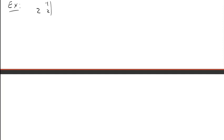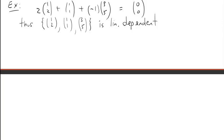For example, if you take 2 times the vector (1, 2), plus the vector (1, 1), plus negative 1 times the vector (3, 5), you get (0, 0). Thus, the set consisting of these three vectors is linearly dependent, and this equation is a dependence relation. Note that the vector in the middle, (1, 1), actually has a coefficient of 1, but we often leave it off for simplicity of notation.